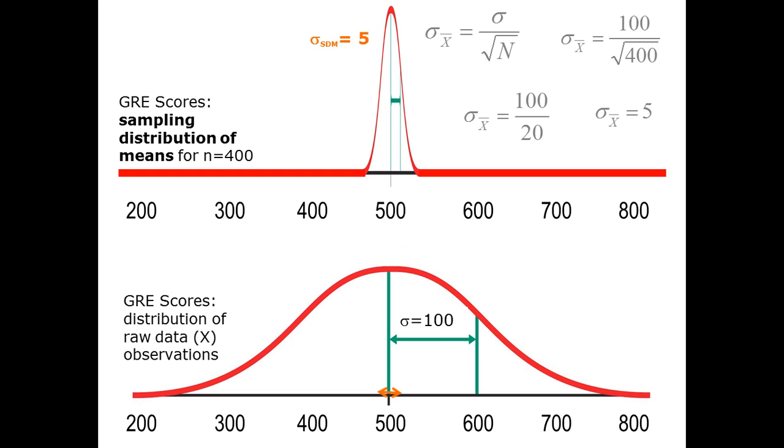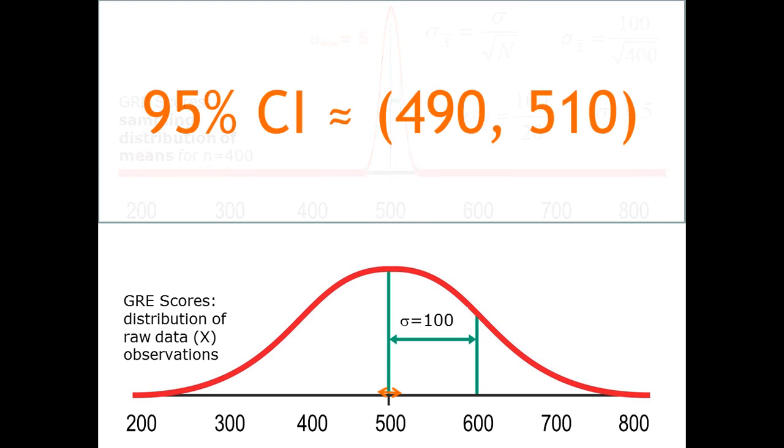So this is a small, small confidence interval now. So now if we had a sample mean of 500, but it came from a sample of 400 individuals, then we would say our 95% confidence interval for that sample mean is 490 to 510. Now it's much smaller. Now it's a range of only 20 points total. So much smaller. We went down from a huge range to a small range, and we did that by increasing our sample size.